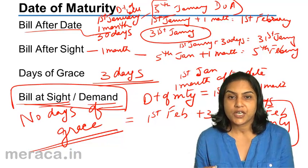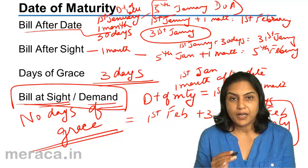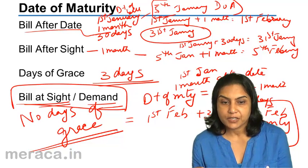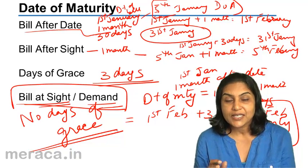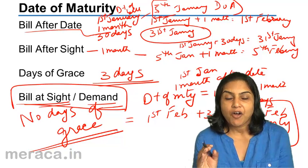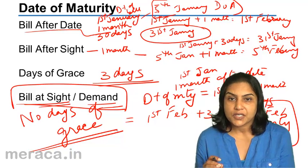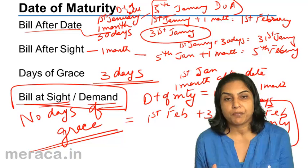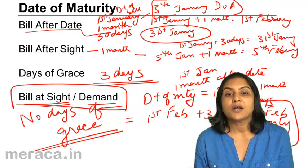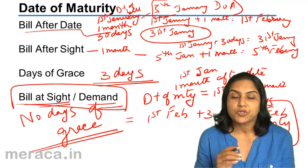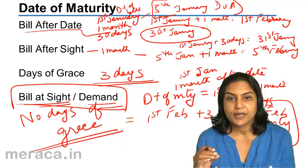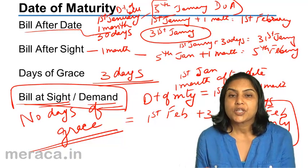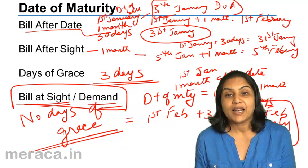So to compute the tenure of a bill, we need to add 3 days of grace to the date of expiry. This date of expiry may be so many days or months after date or after sight. 'After date' means after the date of the bill. 'After sight' means after acceptance in the case of a bill of exchange, or after presentment in the case of a promissory note. Once a promissory note is signed, it is presented and shown to the promissee, and the date is computed from the date on which the promissee has seen the note.